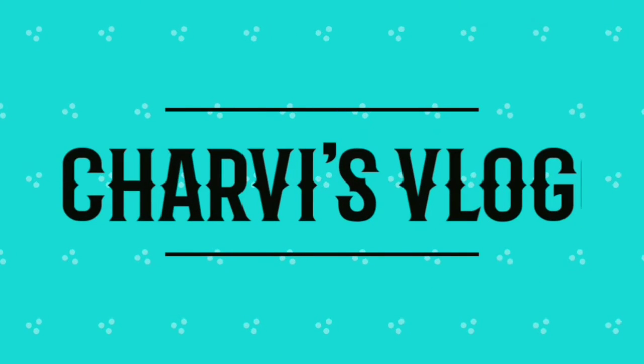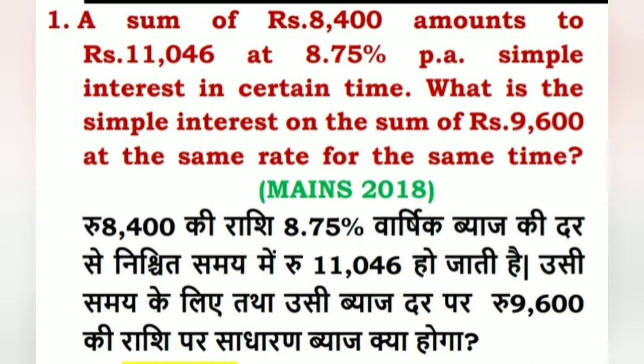Hi friends, this is Shobhan. Today we're going to answer a simple interest question. A sum of Rs.8,400 amounts to Rs.11,046 at 8.75% per annum simple interest in a certain time. The question is: what is the simple interest on the sum of Rs.9,600 at the same rate and same time? The key words here are same rate and same time.